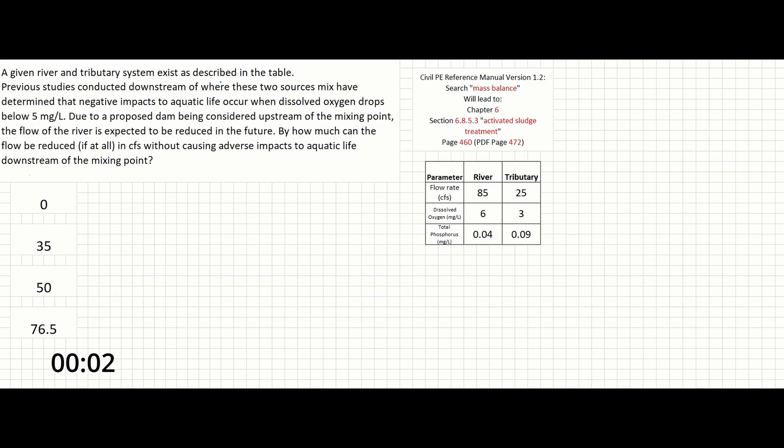A given river and tributary system exists as described in the table. Previous studies conducted downstream of where these two sources mix have determined that negative impacts to aquatic life occur when dissolved oxygen drops below 5 mg per liter.